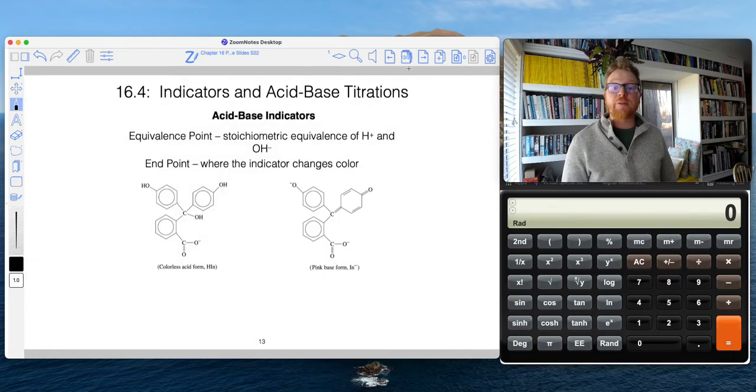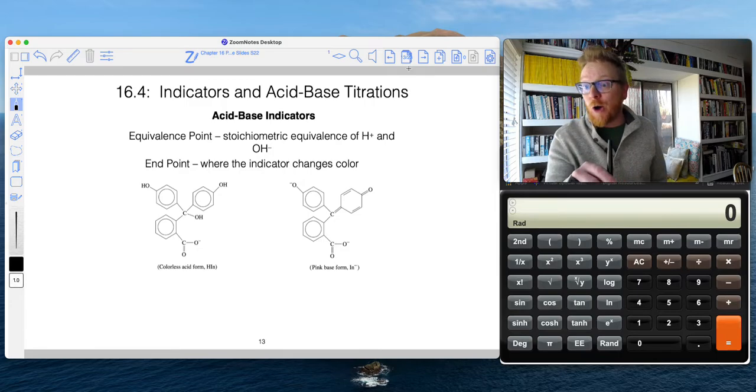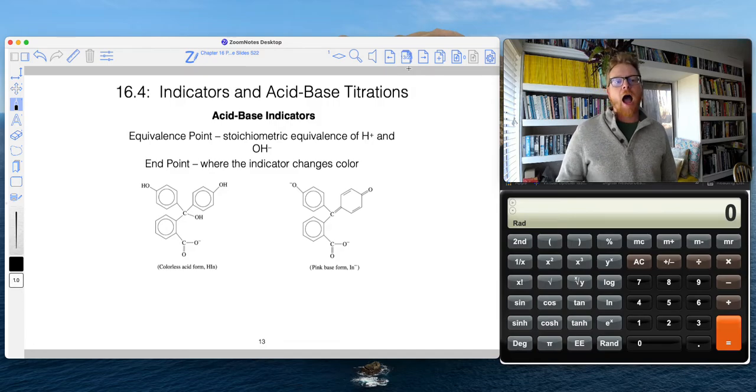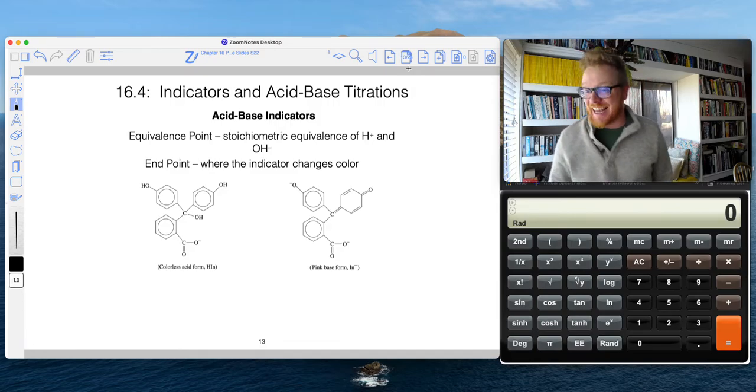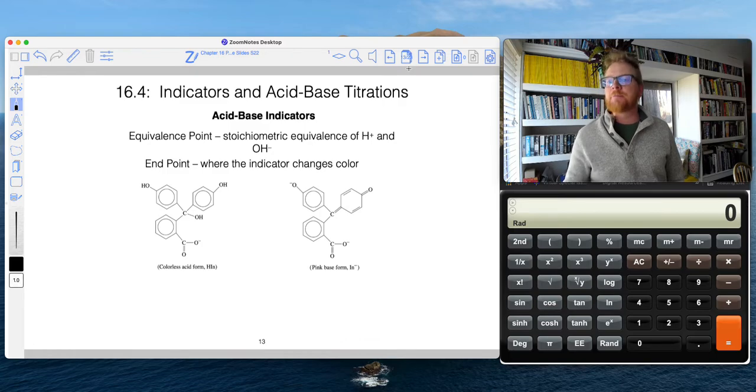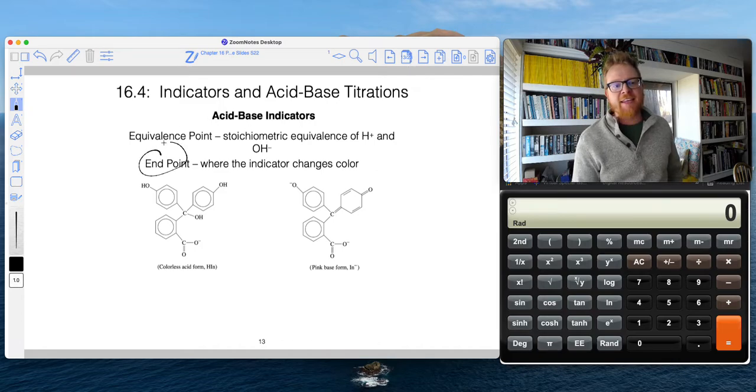Now, if we didn't have a pH meter, you know, some electronic probe that can tell us exactly what the pH is, which eventually you all will get to use in the lab, we would use an indicator. And an indicator is a chemical that we add in a very, very small quantity to our burette. And that will undergo a color change at the end point.